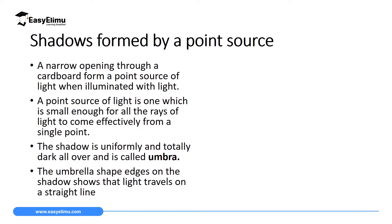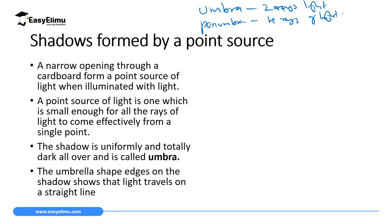From what we have just discussed — and you can move back and confirm from the diagrams we have drawn — for you to have umbra shadow, you need only two rays of light. For you to have both umbra and penumbra, you need at least four rays of light. But how do you form only two rays of light? For you to have only two rays of light, you need what we call a point source. A point source will produce only two rays of light, which will be used to form a shadow we call the umbra.